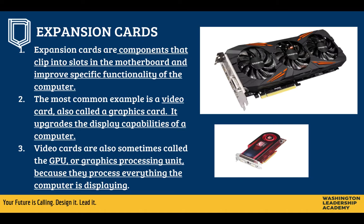Video cards are also sometimes called the GPU, or Graphics Processing Unit, because they process everything the computer is displaying — much like a CPU processes every step of a program's instructions. The GPU does all the calculations to determine what should display, where, and how it should look. That's why it has a fan on it, because it's always working and you don't want it to overheat.